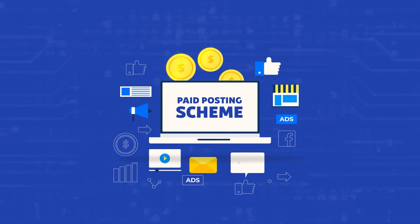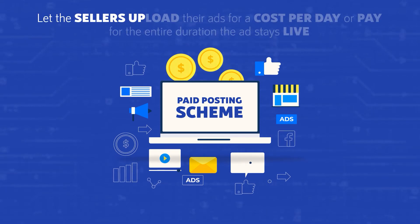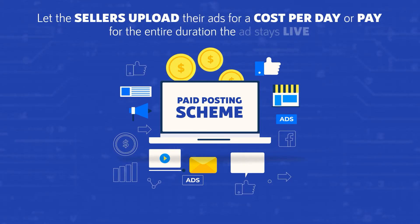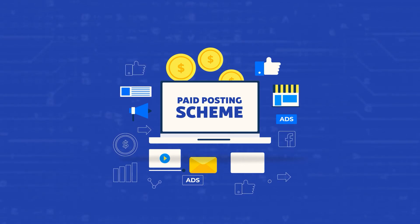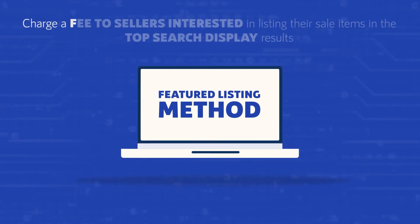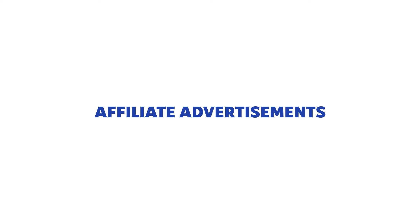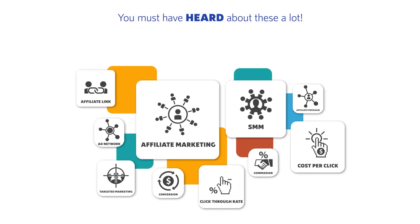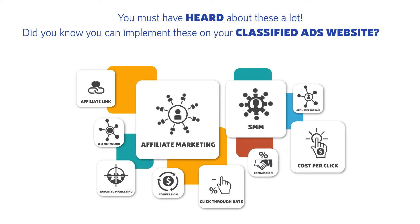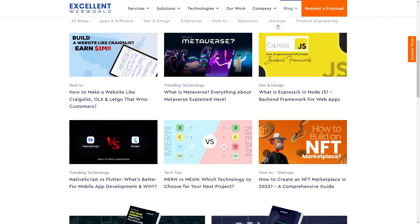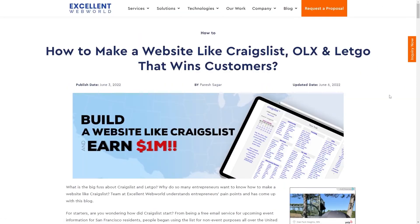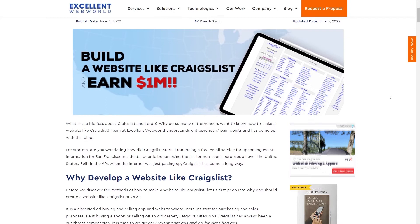First is the paid posting scheme — you can let sellers upload their ads for a cost per day or pay for the entire duration the ad is live. Second is the featured listing method, where you can charge a fee to sellers interested in listing their sale items in the top search display results. Third is affiliate advertisements — you can earn a good percentage of the total sale amount when users click on any link or purchase through links displayed on your platform.